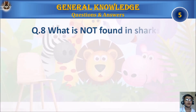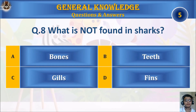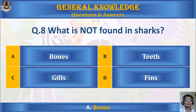Question 8: What is not found in sharks? A: bones. B: teeth. C: gills. Or D: fins. Your time starts. The answer is A: bones.